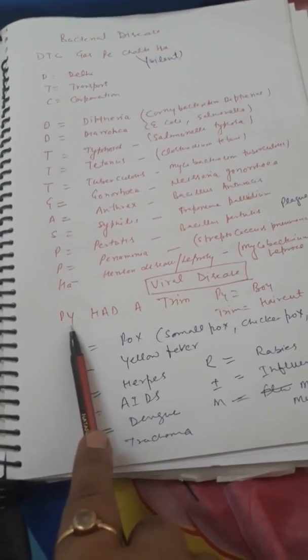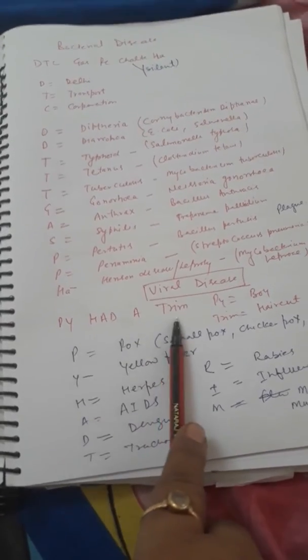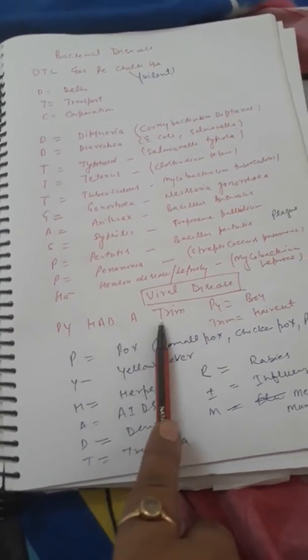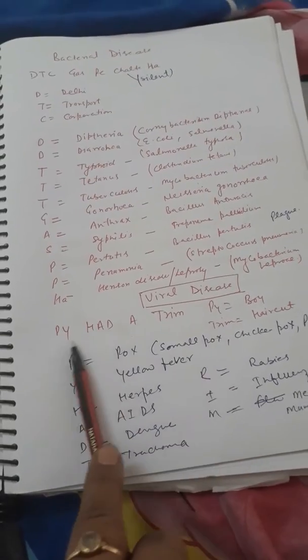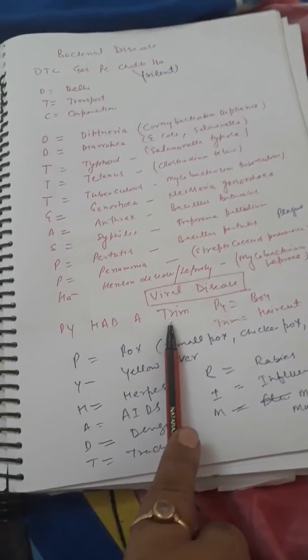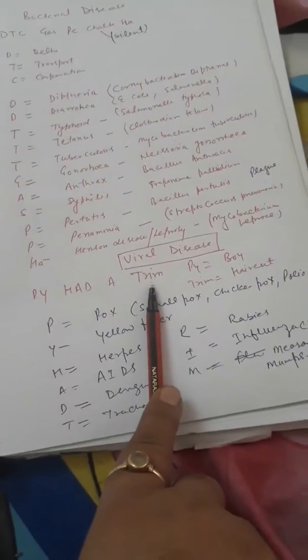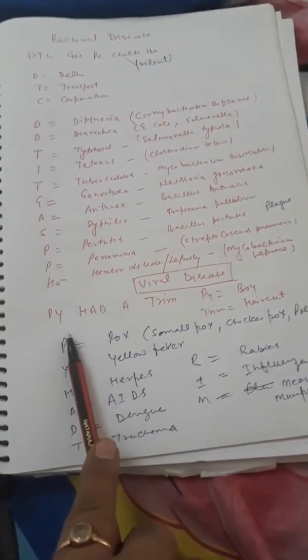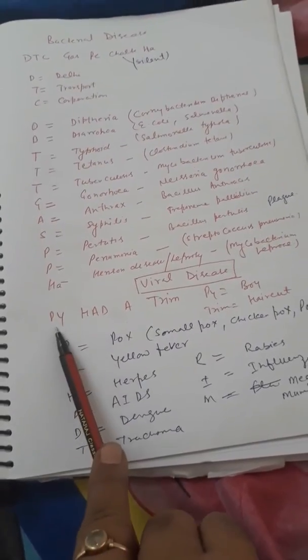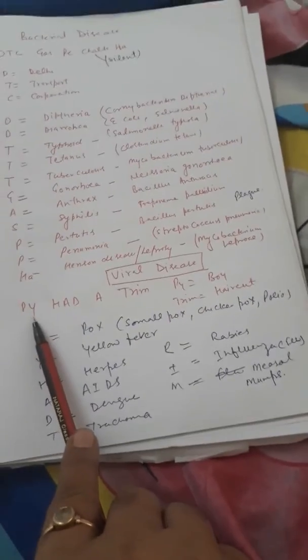Viral disease joh hoti hai, maine iski ek shortcut banaya hai hai - PIE HEAD A TRIM. PIE HEAD A TRIM. PIE matlab ek boy hai usne kya kiya hai, apne hair cut trim, this is the hair cut. Hair cut kaisa karwaya hai? So P se hamare ban jate hai P for Pox. Aur Pox joh hota hai different type ka hota hai jaise Smallpox, Chickenpox.